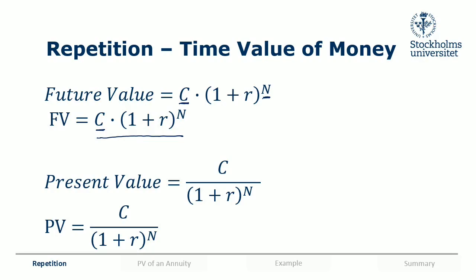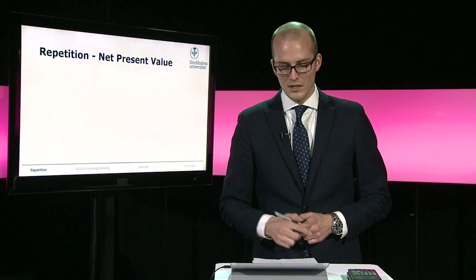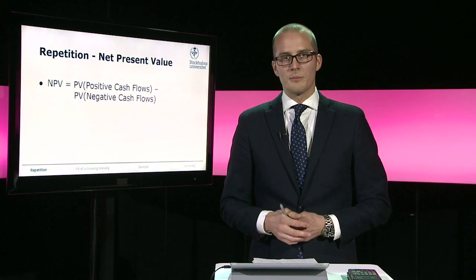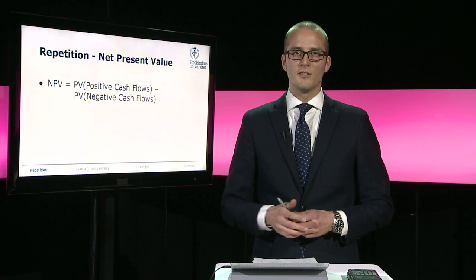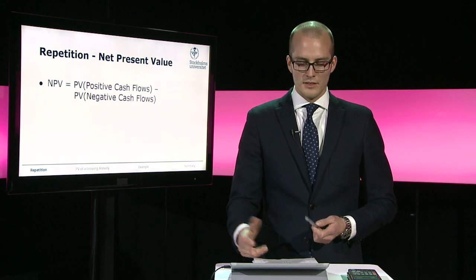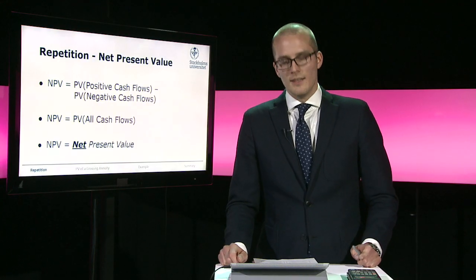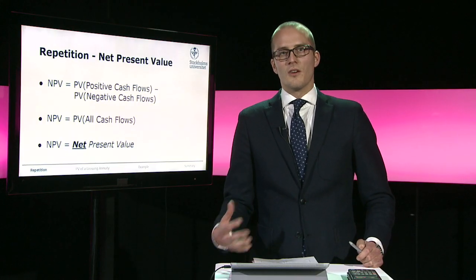We can also do the reverse: calculate the present value of some cash flow C that we get in N years by dividing it with one plus the interest rate raised to the power of N. And the net present value is the present value of the positive cash flows minus the present value of the negative cash flows — it's called net present value because it's the net of the present values.